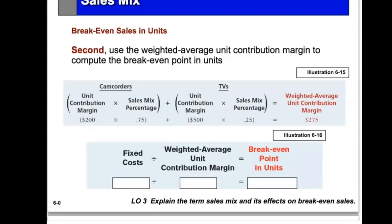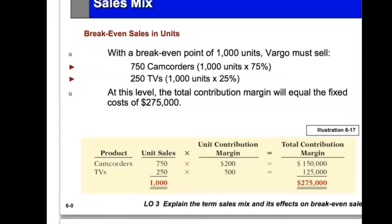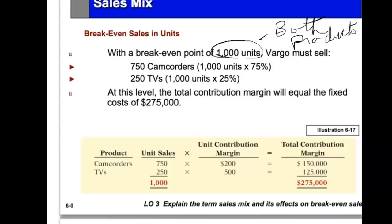We then use this weighted average contribution margin to compute the breakeven. The fixed cost is $275,000, and the weighted average contribution margin per unit is $275, therefore the breakeven point is 1,000 units for both products combined. We need to sell 1,000 units assuming the sales mix stays the same, so we break it down: 1,000 units times 75% means we must sell 750 camcorders and 250 televisions.